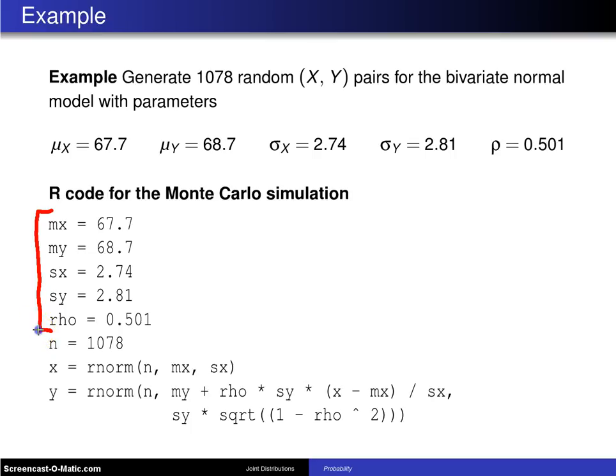The next statement indicates that we want to generate 1078 of these values. And the next statement generates 1078 normals with a mean of 67.7 and a standard deviation of 2.74.